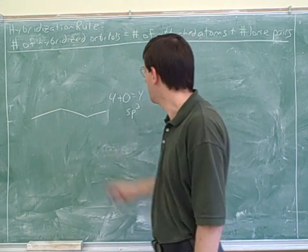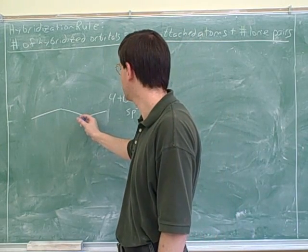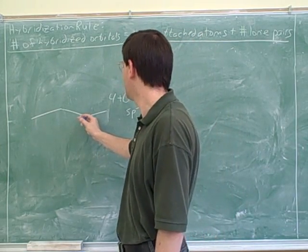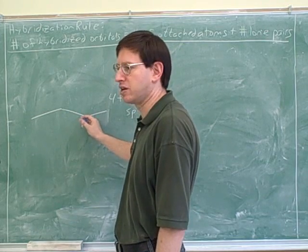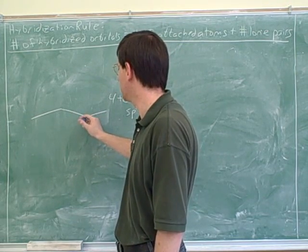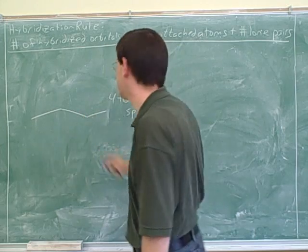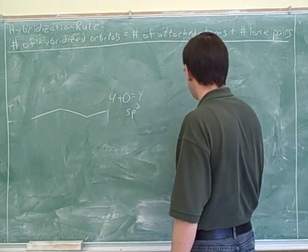What would be the hybridization of this carbon? SP3. Because again it has four attached atoms and no lone pairs — two carbons and two hidden hydrogens. Good.